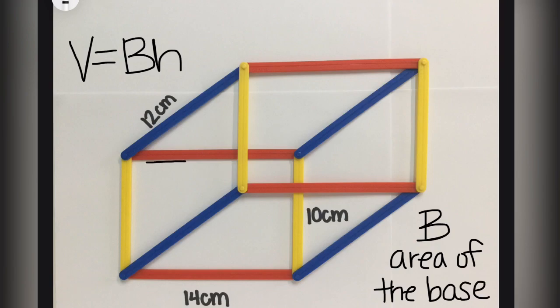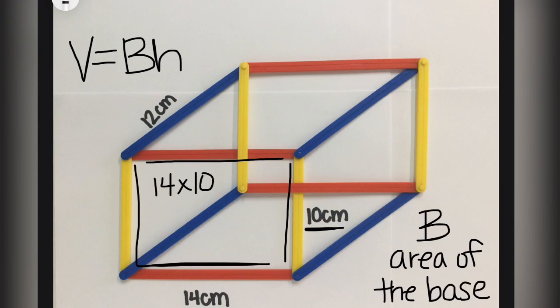In our previous slide, we showed you that this red by yellow rectangle completes the base. We see that it's 14 centimeters by 10 centimeters. So we multiply that and we get 140 centimeters squared. And that becomes the area of the base or capital B.